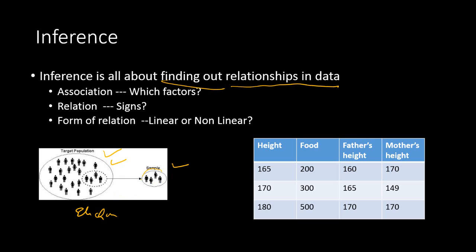Taking a sample from population and making an inference is part of statistical inference. When we talk about inference we talk about three major things. One is finding out the association between different variables, which factors. We will take an example and that will be more clear.